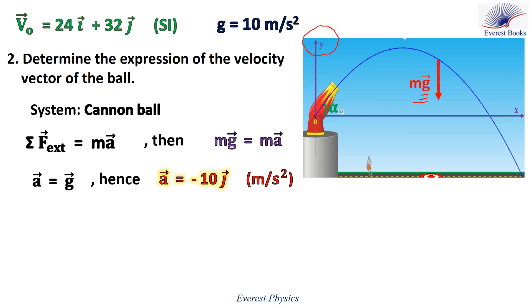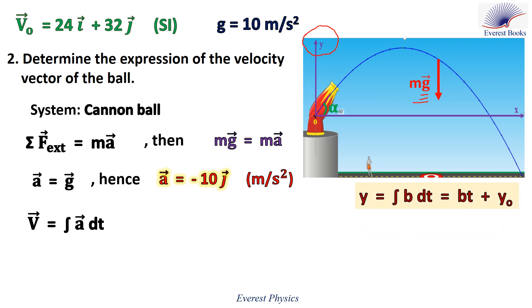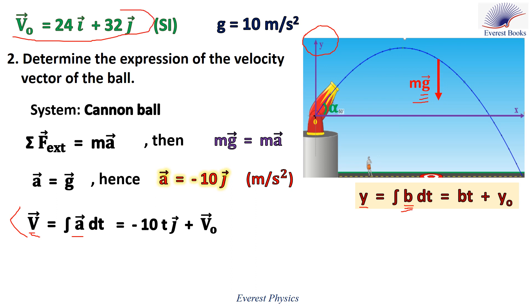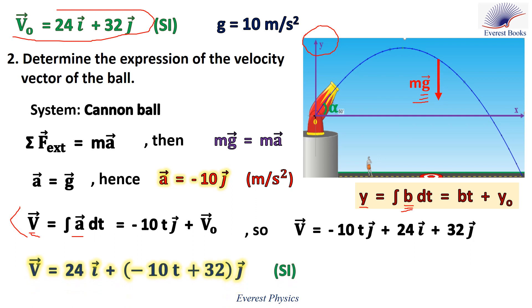Now we want to determine the expression of the velocity. The velocity is the antiderivative of the acceleration with respect to time. If y is the antiderivative of b with respect to time, where b is constant, then y equals bt plus y0. Applying this rule, v equals minus 10t·j plus v0. Substituting v0 equals 24i plus 32j, and rearranging, the velocity of the ball is v equals 24i plus (minus 10t plus 32)j in SI units.